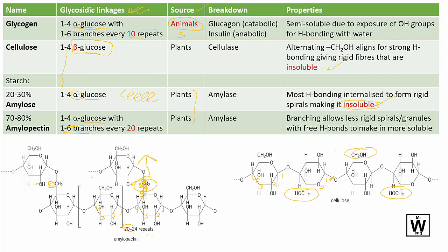This is really a biology unit and this is how they incorporate a bit of chemistry — describing the structure. Because amylopectin and glycogen have branches, the extra OH groups allow some hydrogen bonding, making them more soluble — though not completely soluble, more semi-soluble.